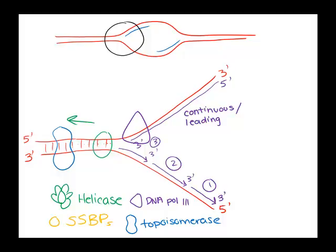To make the lagging strand you have to do these short backward stitches — all to get around the rule of reading 3' to 5' and writing 5' to 3'. Those separate chunks have a name: they are called Okazaki fragments, named after a Japanese scientist named Okazaki.